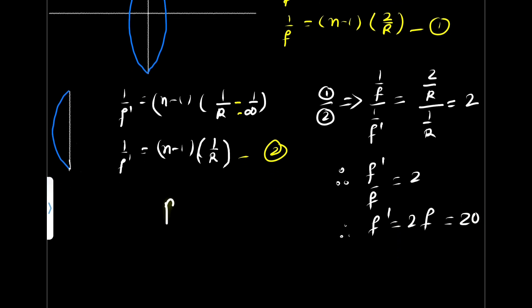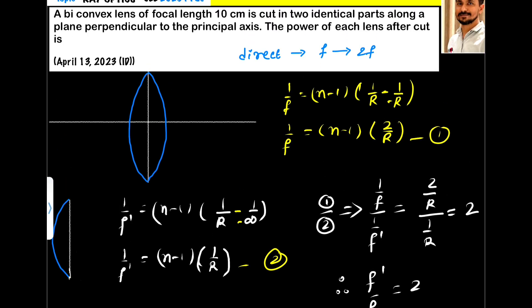Now we know that power equals 1 upon f. So it is in centimeter so we have to convert it into meters, or we can directly write 100 by 20, because I am converting this into meter. So 100 by 20 is 5D, so the power of the lens is 5.